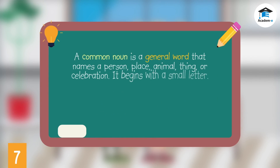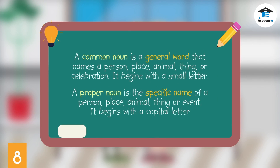A common noun is a general word that names a person, place, animal, thing, or celebration. A proper noun is the specific name of a person, place, animal, thing, or event.